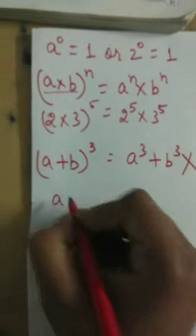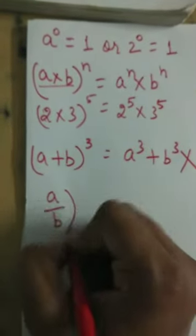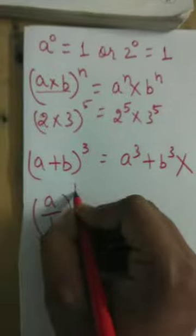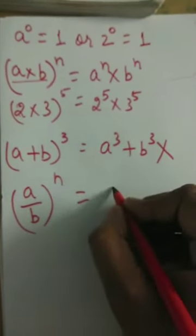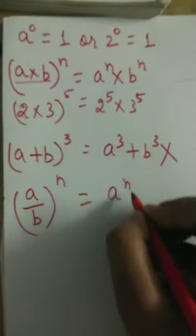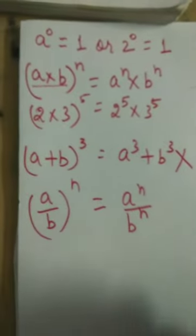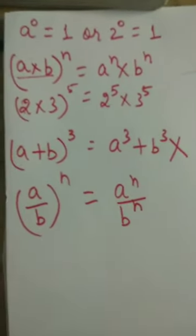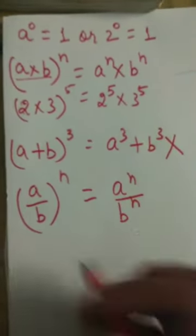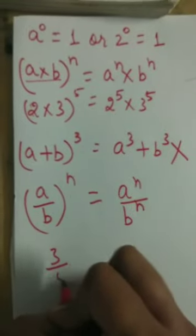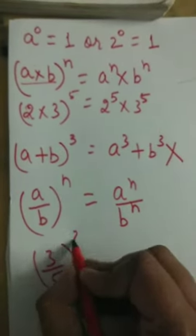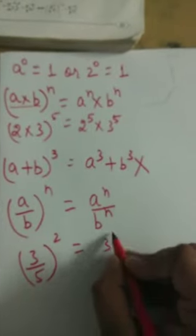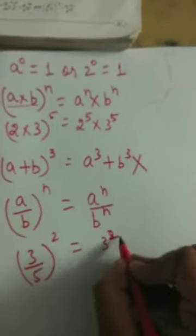Similarly, if two different numbers in a fraction are each raised to the same power n, it can be written separately: (a/b) power n equals a power n upon b power n. For example, (3/5) power 2 equals 3 power 2 upon 5 power 2.